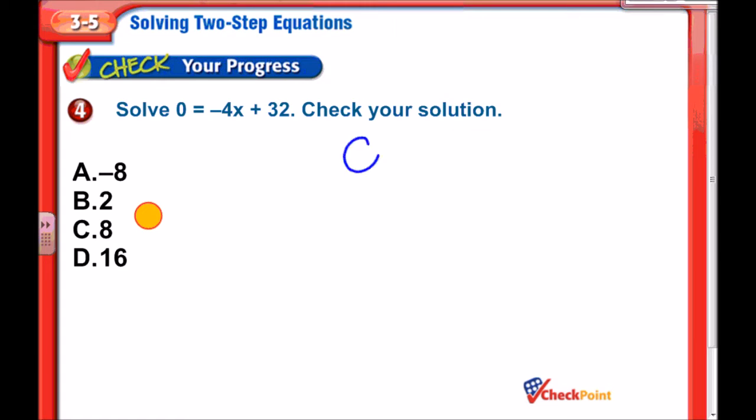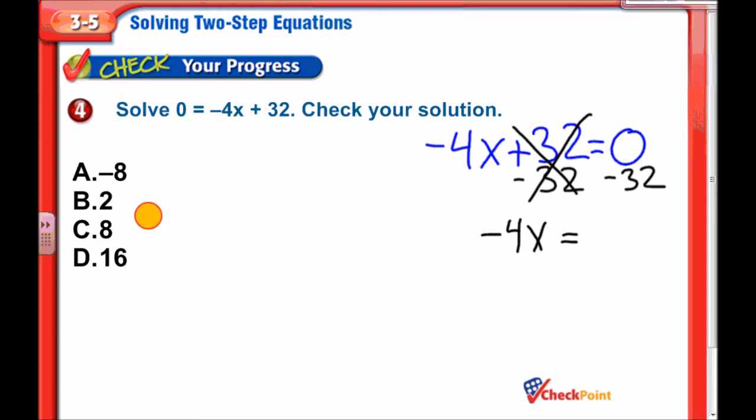0 equals negative 4x plus 32. Now, if you're looking at that and not liking how the negative 4x plus 32 is on the right-hand side with the 0 on the left, if that bothers you, there's absolutely nothing wrong with doing something like this. Does that make you feel better? It really doesn't matter which side the equals on as long as we haven't changed what the equation is standing for. So here we go. We're going to undo our addition with subtraction. Our two 32s cancel out, leaving us negative 4x equaling 0 minus 32 would be negative 32.